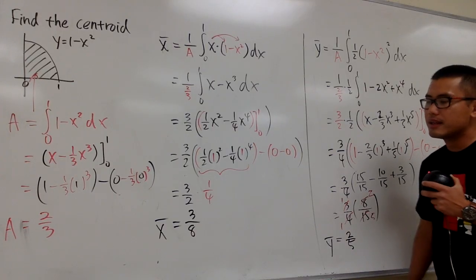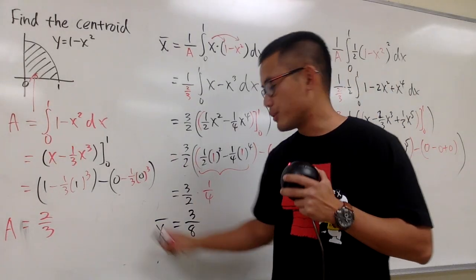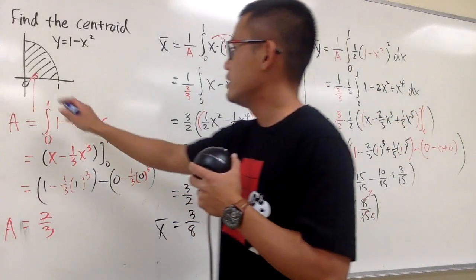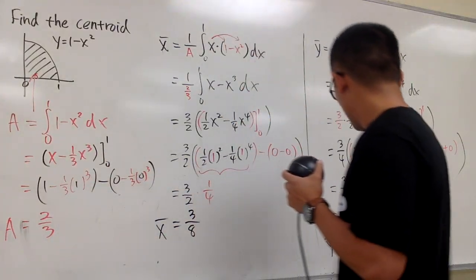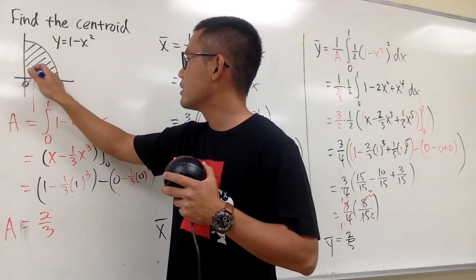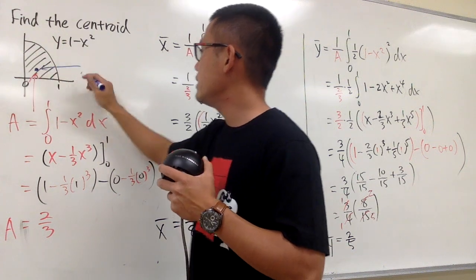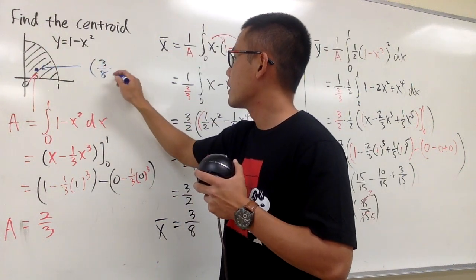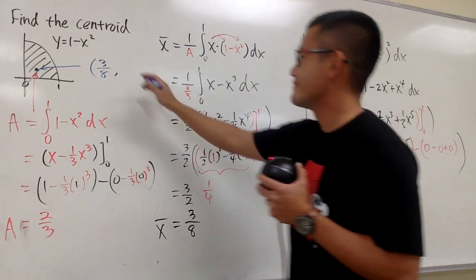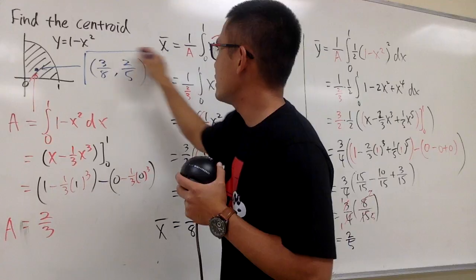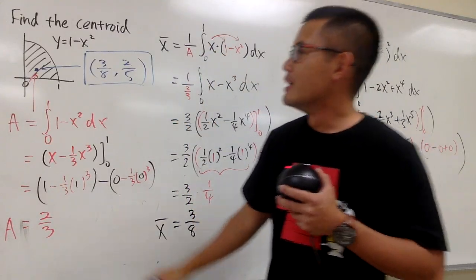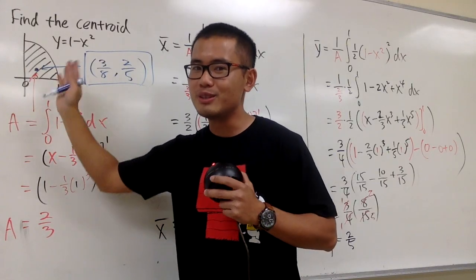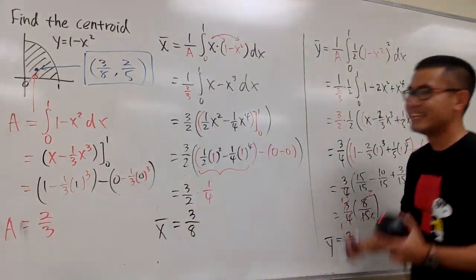So coming back here, x-bar is 3 over 8, and y-bar is 2 over 5. The centroid is (3/8, 2/5), and this is the answer. That means if this region is like a plate, you can hold your finger right at that point and balance the region. That's pretty cool!